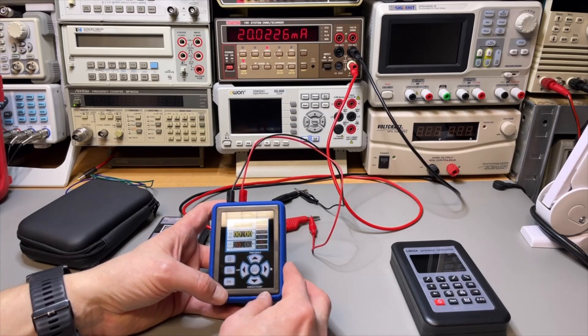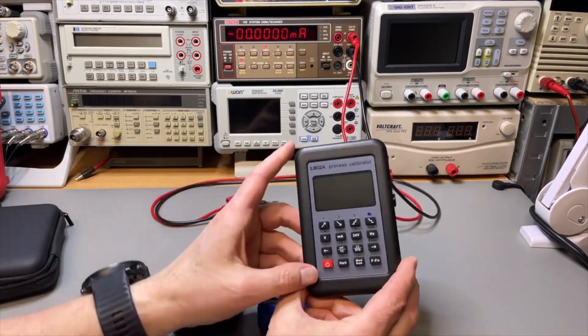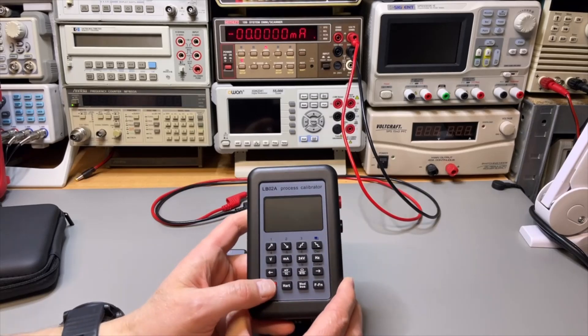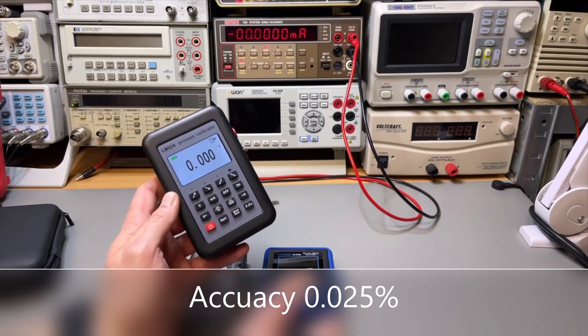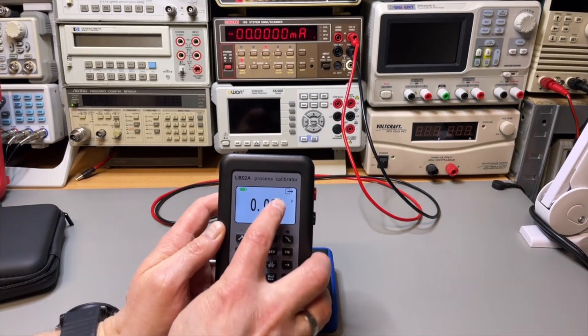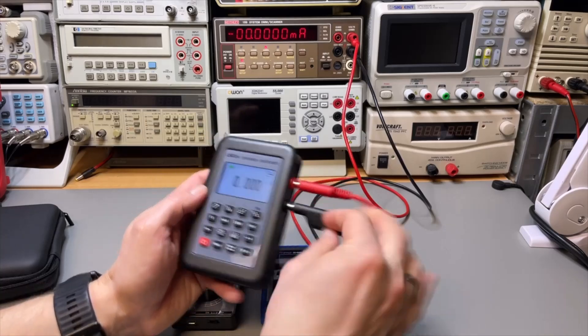Then we have the one I use most, that is the LB02A. This one is 0.025 percent so that is a lot better. You can also see it as an extra digit. Let's see if we put this one to 10 volts. It says it comes calibrated and if I look at my meter I tend to believe that.